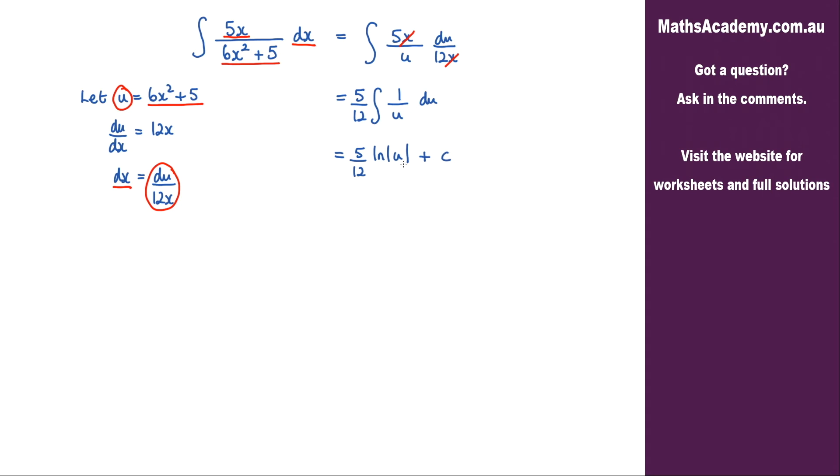Now the final step is to substitute back in for u. And u is 6x squared plus 5. So we have 5 over 12 log of 6x squared plus 5, and then just add on that constant.